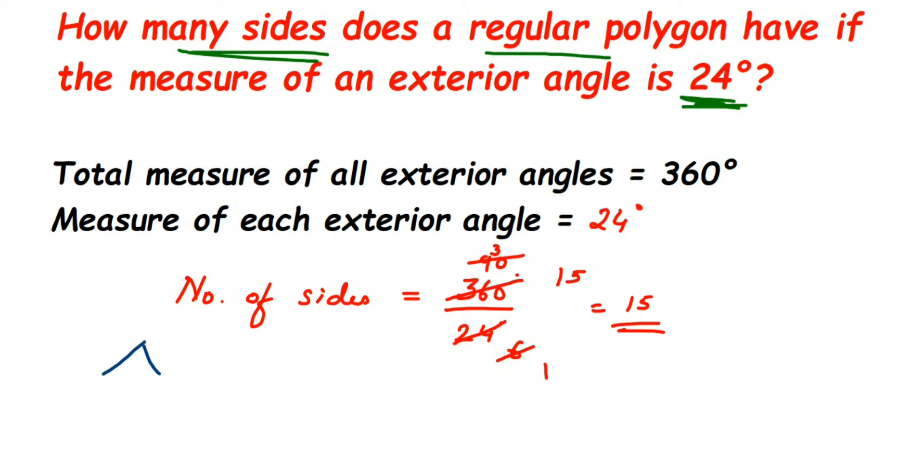Let us take the example of a triangle. In a triangle we have three sides, and there will be three interior angles and three exterior angles. Similarly, to find out the number of sides here, I divided the total exterior angles, 360 degrees, by one exterior angle which is 24 degrees, then I got 15, which means it has 15 sides.